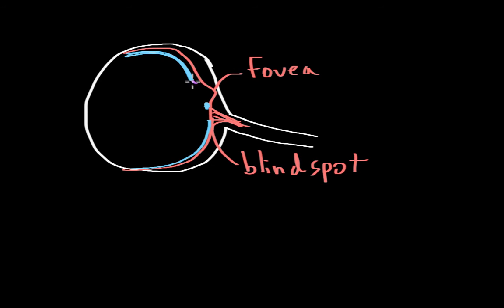Cones, which we'll represent in purple, are found throughout the fovea in a really high concentration. There are no cones at the blind spot, and there are very few cones sprinkled throughout the rest of the periphery of the eye.